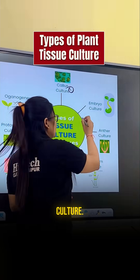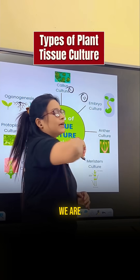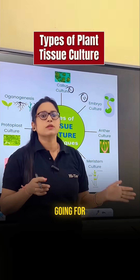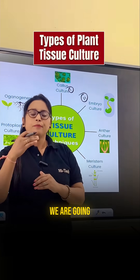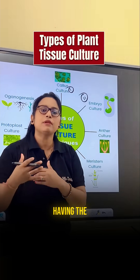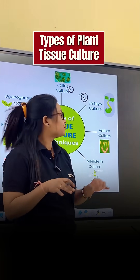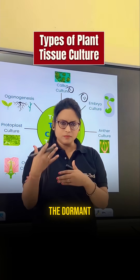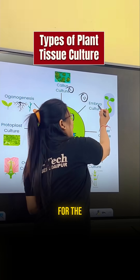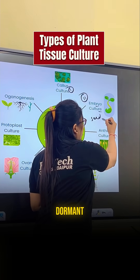Next is embryo culture, where we are taking the embryo as the explant. We go for embryo culture when we have seeds that are in a premature, sterile condition or have gone into a dormant condition — for example, dormant seeds.